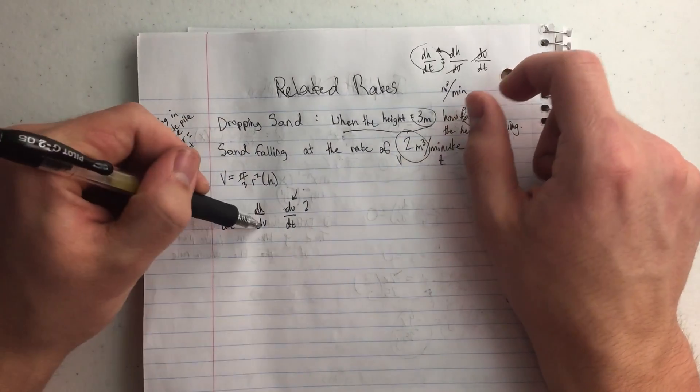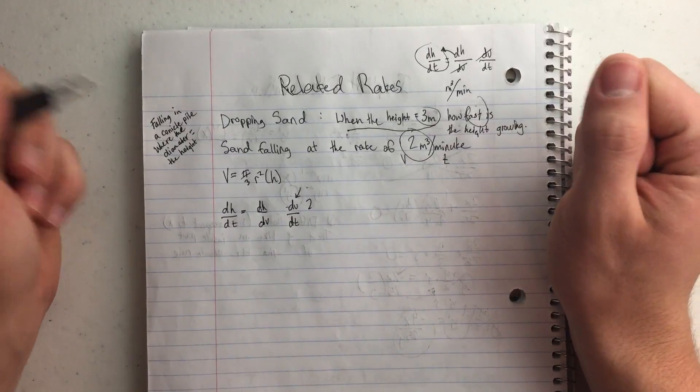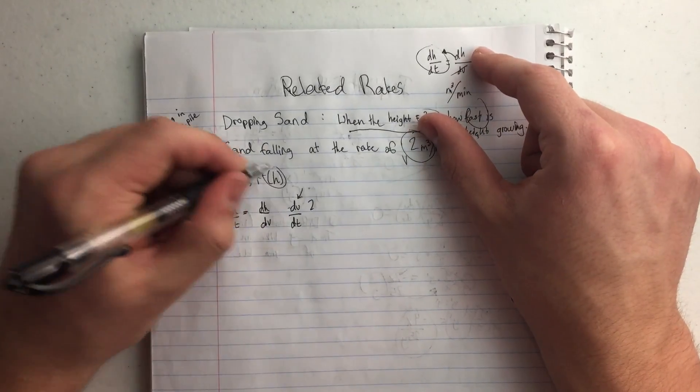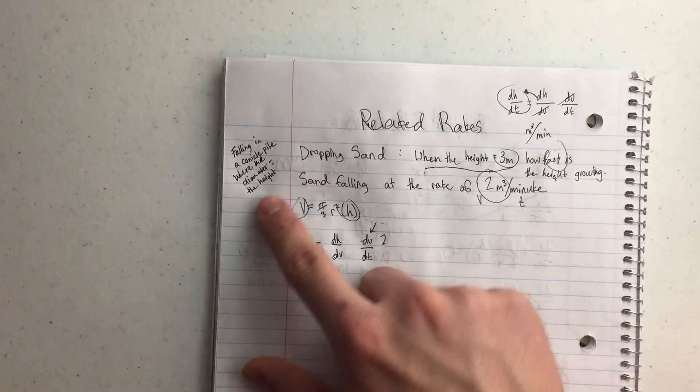So I need a dh over dv equation. I don't know how I'm going to get that. I do have a v over here. I have an h over here,